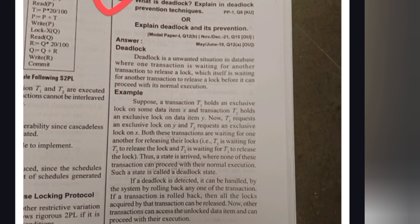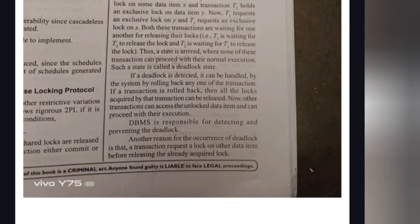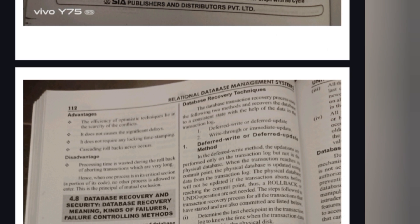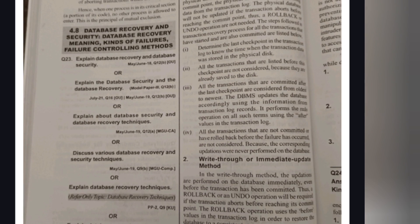The third most important question from Unit 4 is Deadlock and its Prevention. A deadlock is an unwanted situation in a database when one transaction is waiting for another transaction to release its lock — for example, transaction T holds an exclusive lock on some data item. For deadlock prevention techniques, there are two types: Wait-Die and Wound-Wait schemes — learn their advantages and disadvantages.